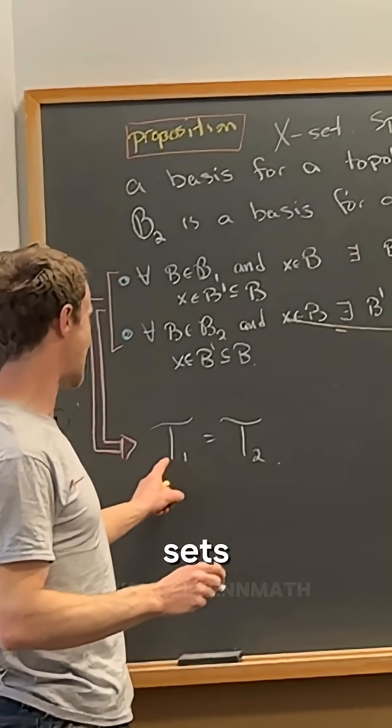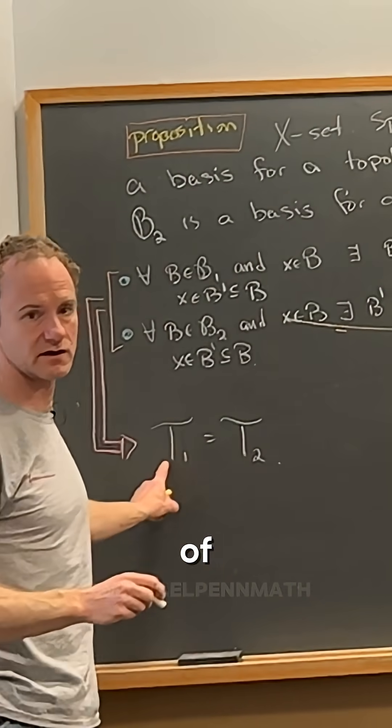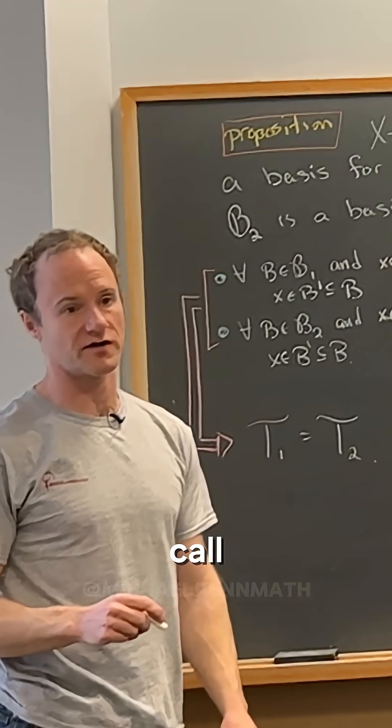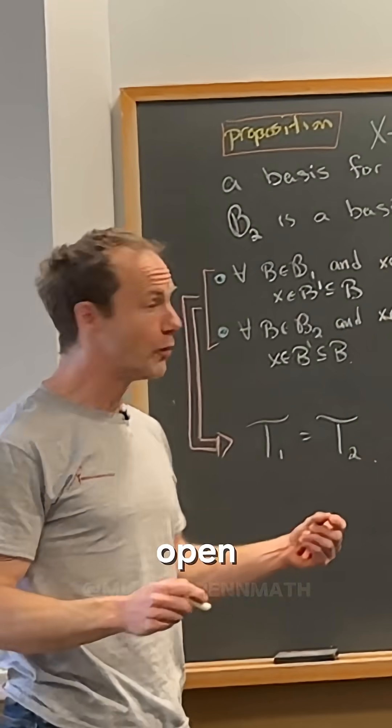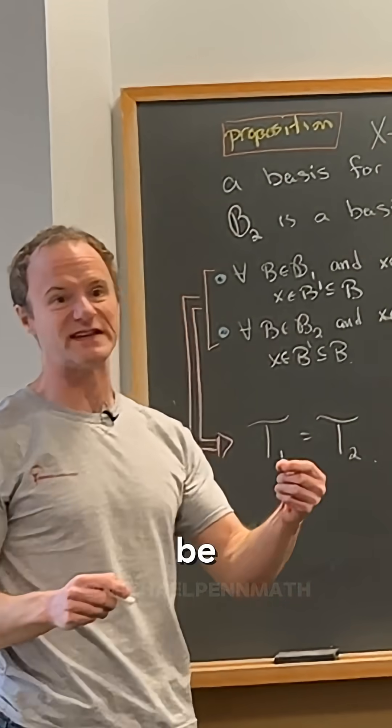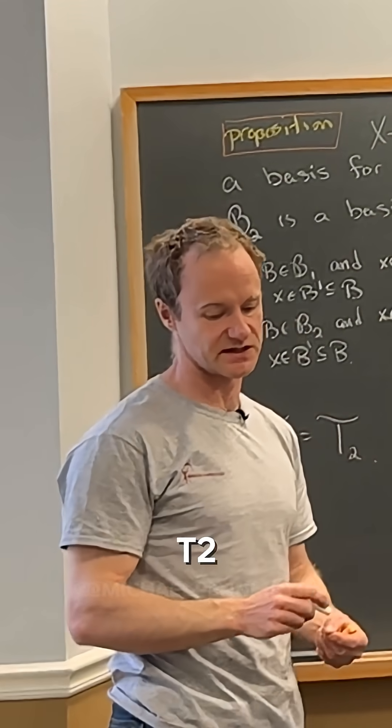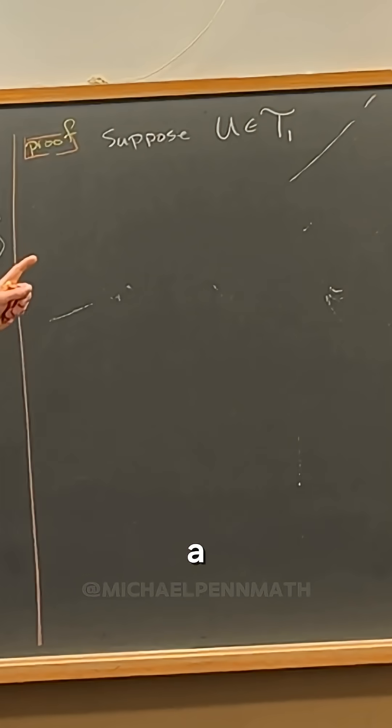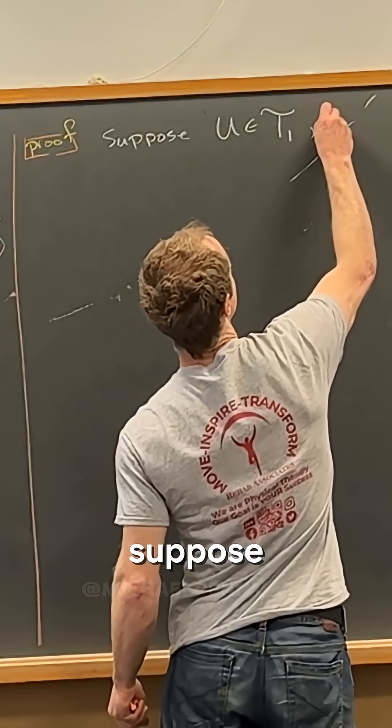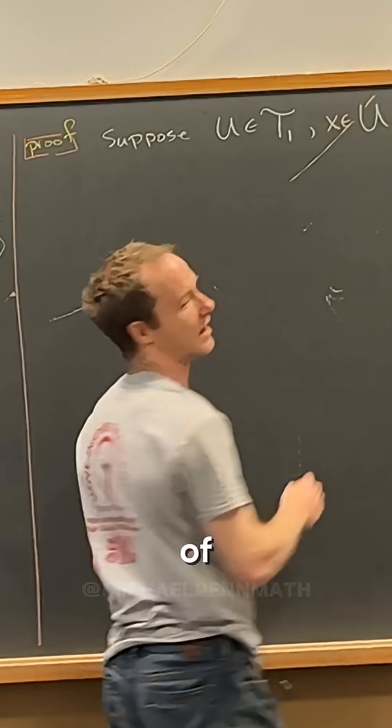And we call the sets inside of t1 and t2, we call them open sets. And being open with respect to t1 may be different than being open with respect to t2. So let's suppose that u is open in t1. And let's also suppose that x is inside of u.